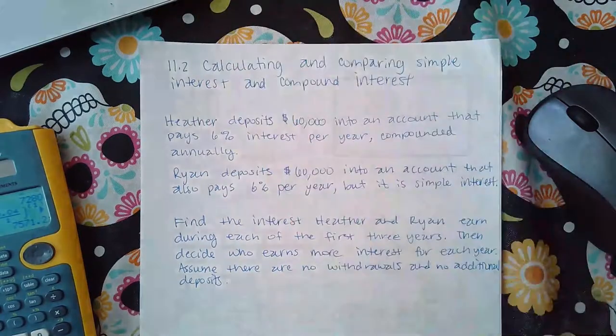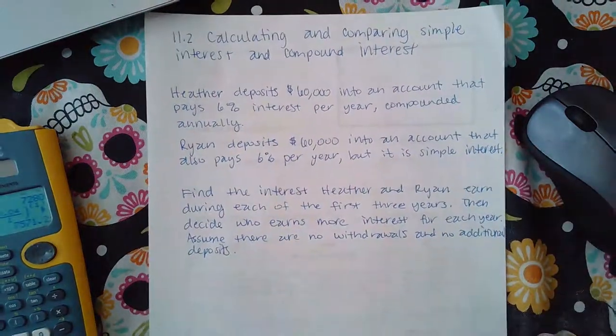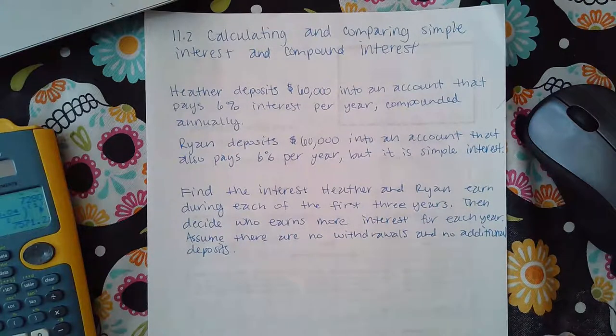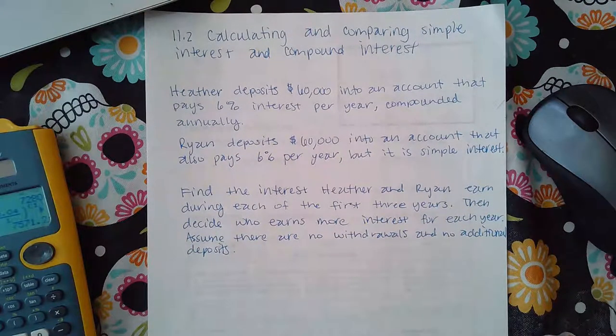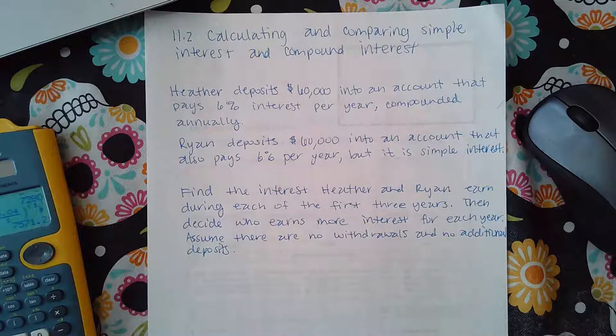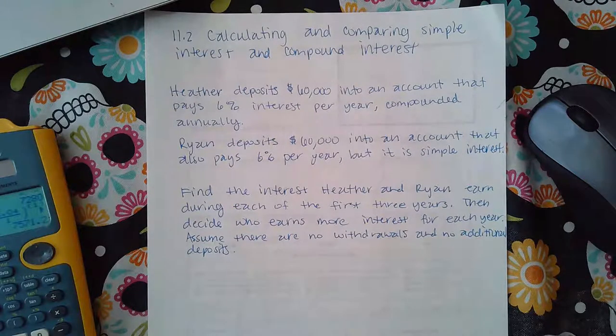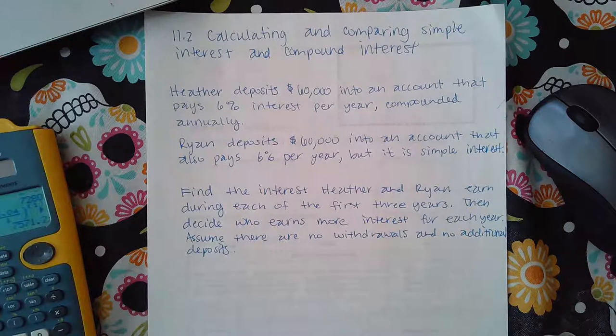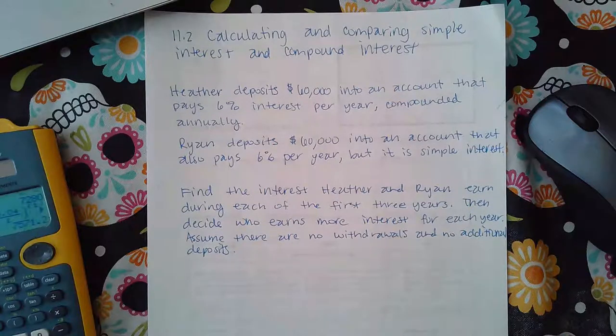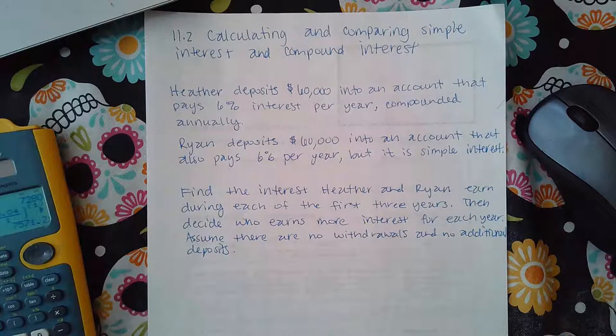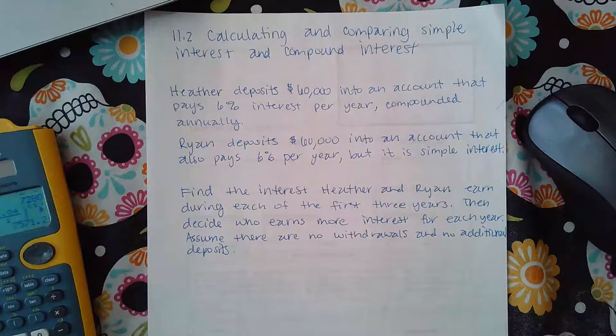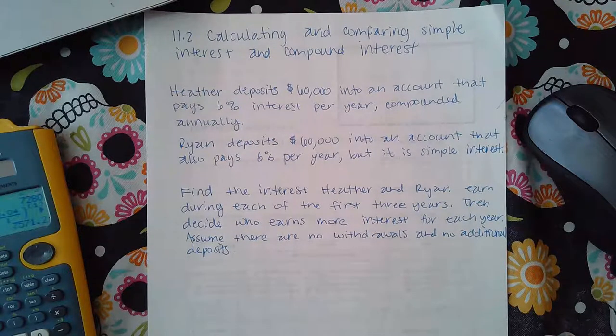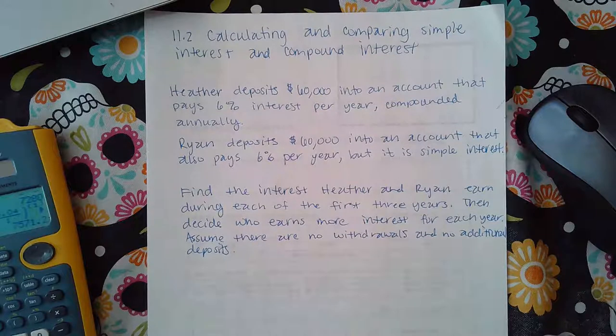So it says Heather deposits $6,000 into an account that pays 6% interest per year and it's compounded annually, which means only one time per year. And then it says Ryan deposits $60,000 also into an account that also pays $6,000 per year.